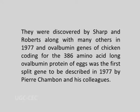Split genes, also known as interrupted genes, are the genes which possess extra non-coding or non-essential regions called introns, special DNA or intervening sequences, interspersed with essential or coding parts called exons. They were discovered by Sharp and Roberts along with many others in 1977, and the ovalbumin genes of chicken coding for the 386 amino acid long ovalbumin protein of eggs was the first split gene to be described in 1977 by Paris Chambon and his colleagues.